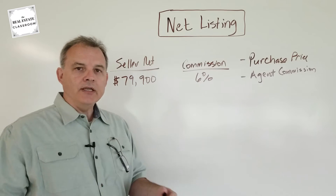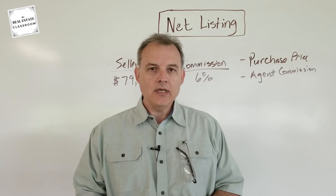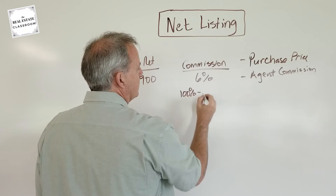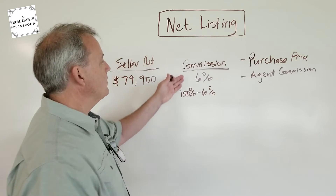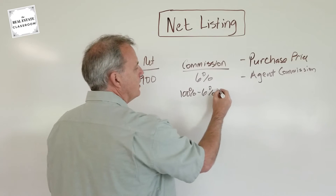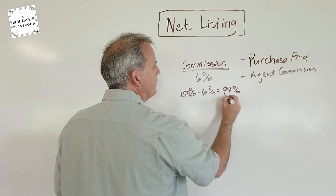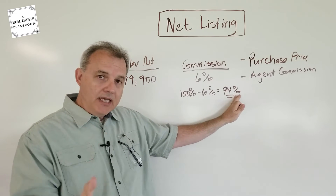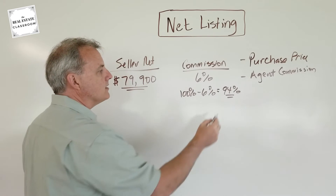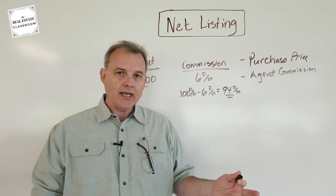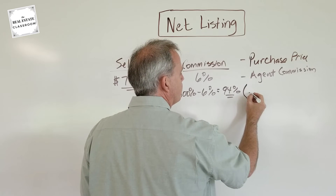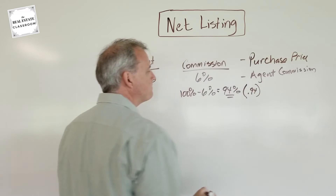So how do we figure this out? The first thing we gotta do is take 100% and minus the 6%. If the broker wanted 10%, we would take 100% minus 10 — but in our scenario the broker wants 6%, so that gives us 94%. This 94% is important because the $79,900 seller net represents 94% of the overall transaction. We convert 94% into decimal 0.94.